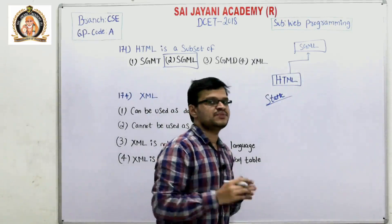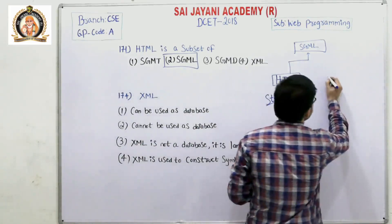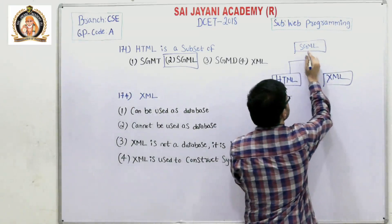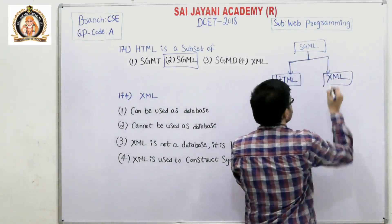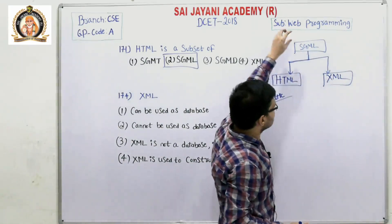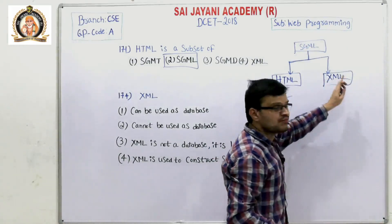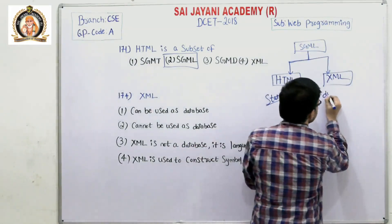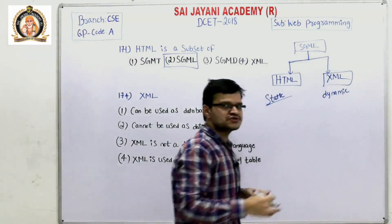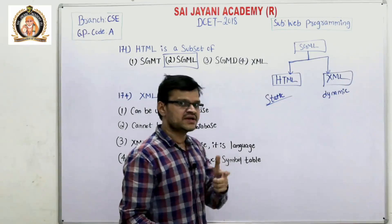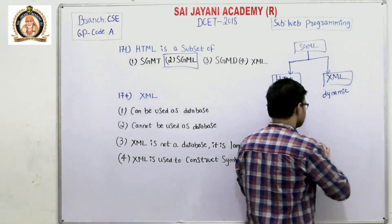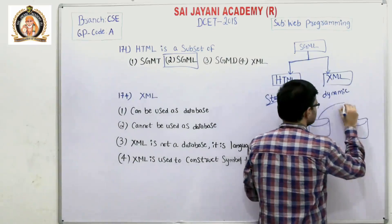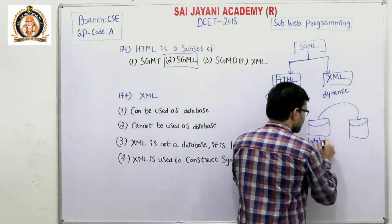HTML is static because it is only used to display data. XML is also a subset of SGML. XML means Extensible Markup Language. It is also used to create web pages and web applications, but it is dynamic in nature because it is mainly used to transport data from one database to another database.